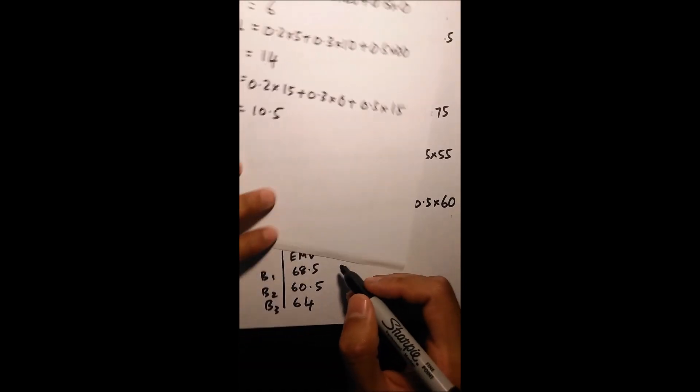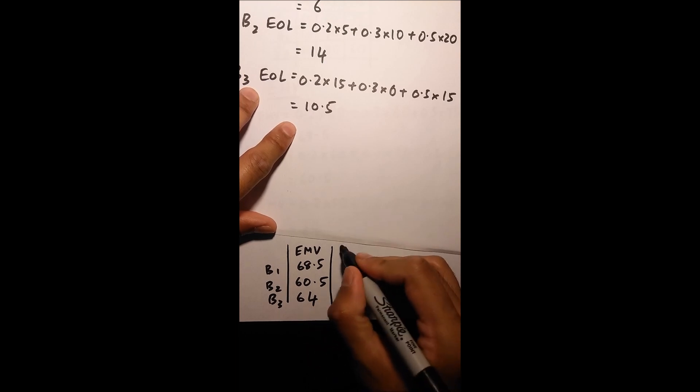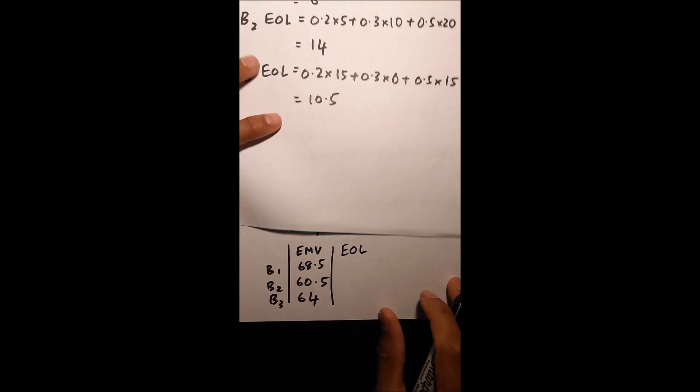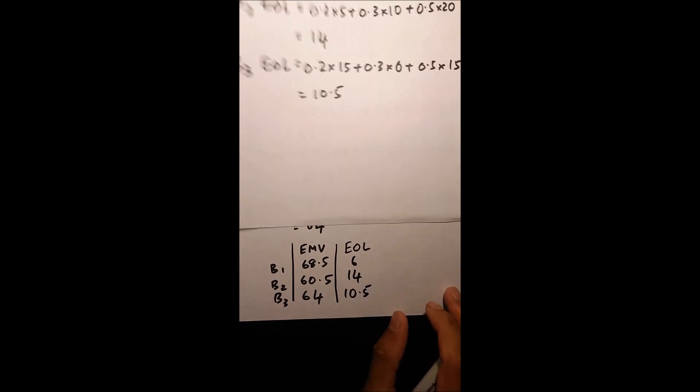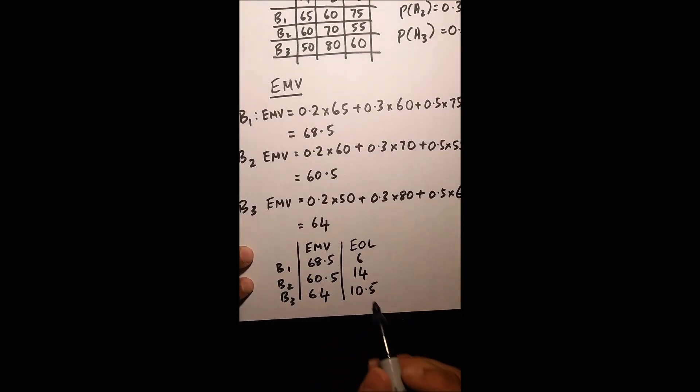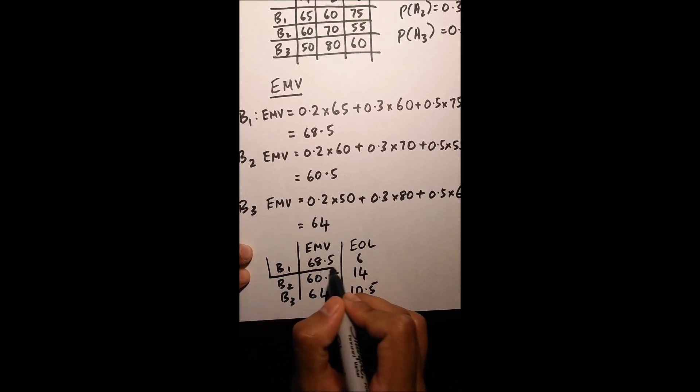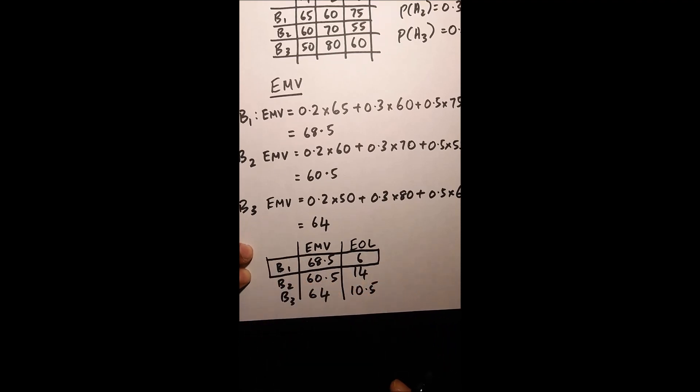So I'm going to fill out these numbers back into this EMV table in my first sheet. I'm going to add a column called EOL: 6, 14, and 10.5. So those are my solutions for my calculations. Now, if you're basically looking at this EMV EOL table, you want to have the highest EMV and the lowest EOL in the same column. So in this case, it's B1.